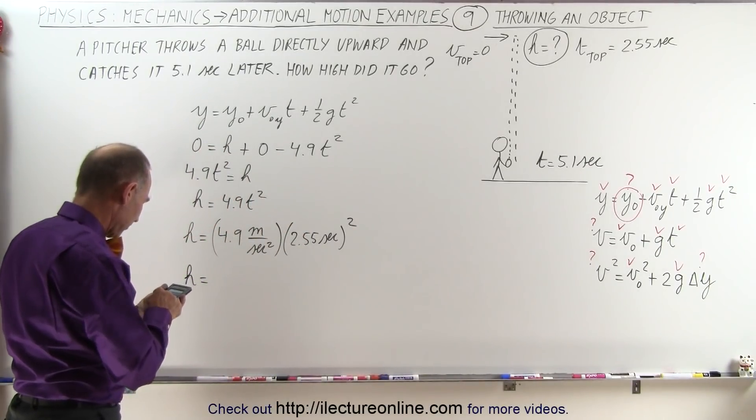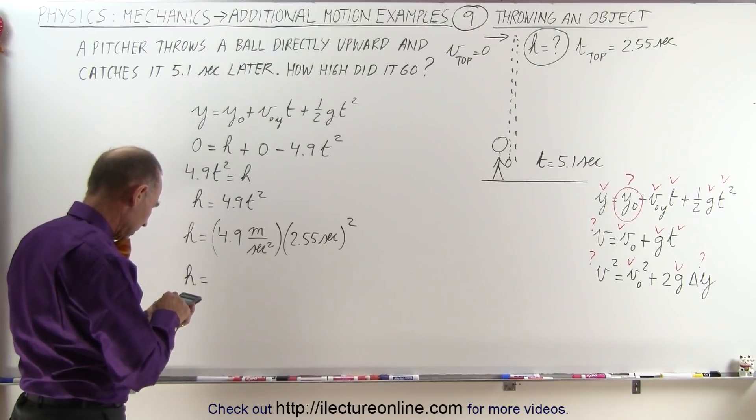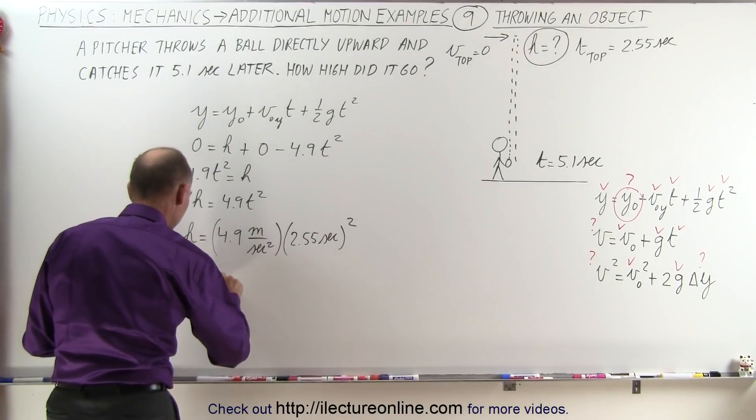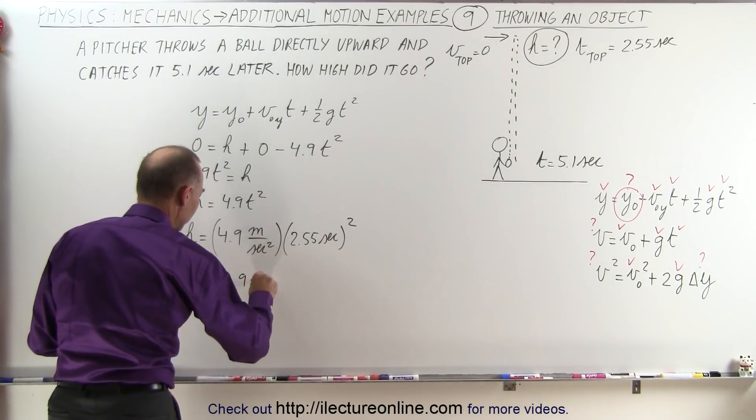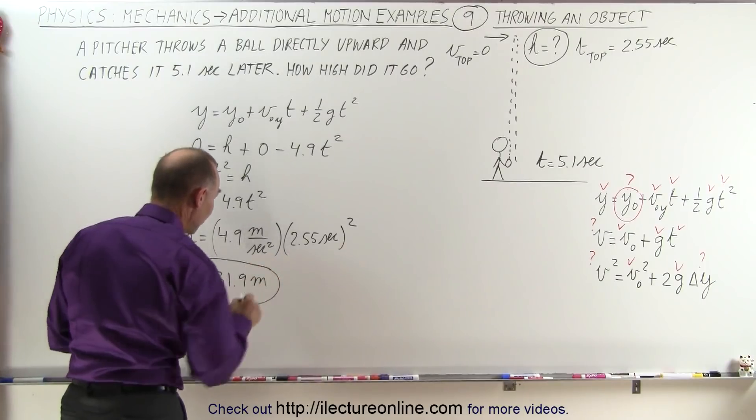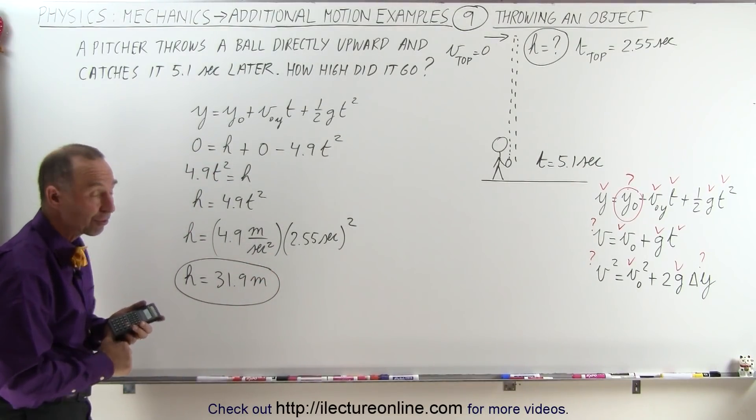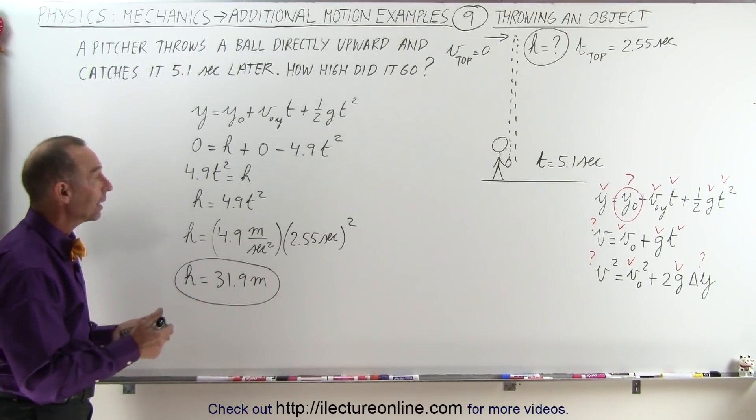So 2.55 squared times 4.9, that would be 31.9 meters, 31.9 meters. That's almost 100 feet, that would be quite a throw to throw a ball that high, but I guess if you have a strong arm you might be able to do that.